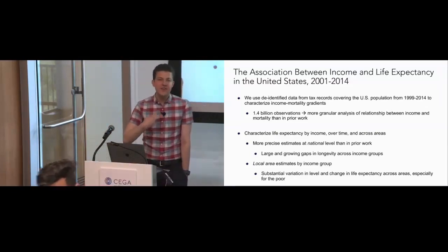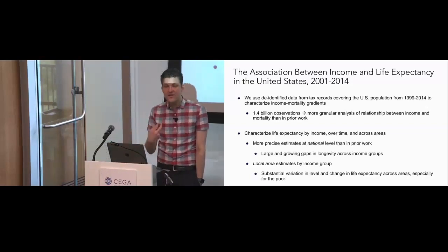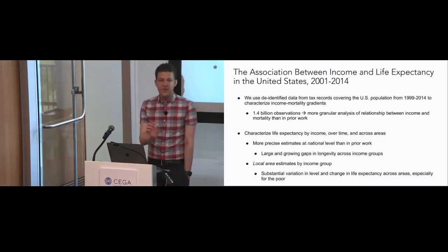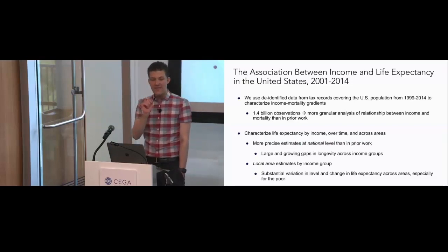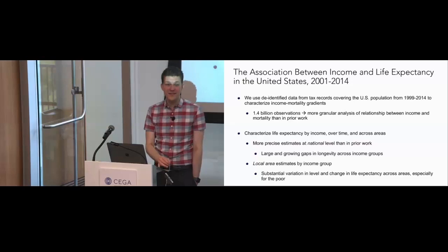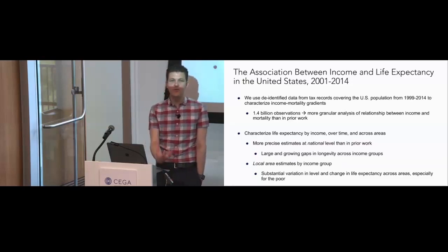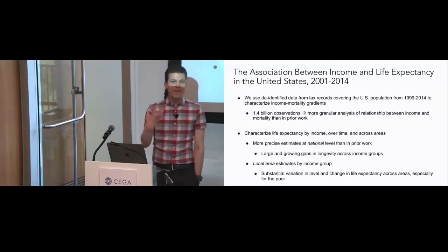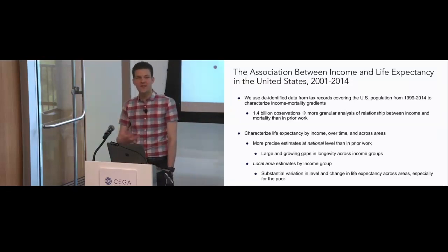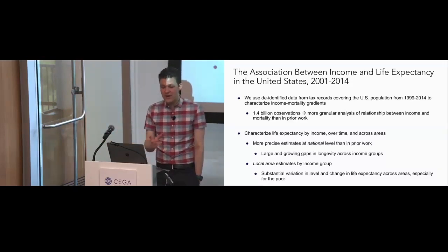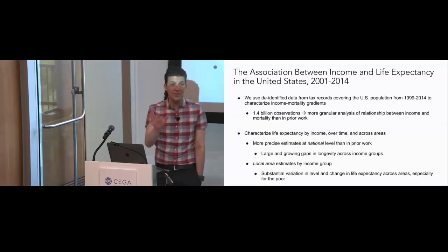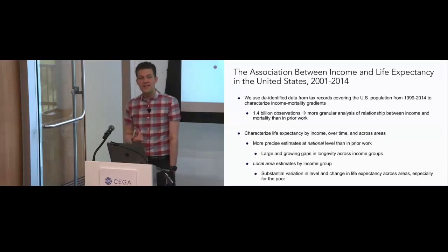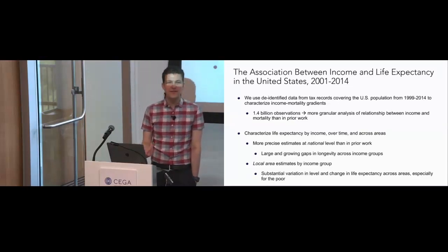This project has really two contributions to the literature. One is more precise estimates at the national level — we can look at income percentiles in different states. The second is local area estimation. If you're working with survey data, it's really impossible to drill down to individual counties or commuting zones. But we're able to see substantial variation in the level and change in life expectancy across areas, and see that variation is especially large for the poor. If you're rich, it matters much less where you live than if you're poor in the United States.